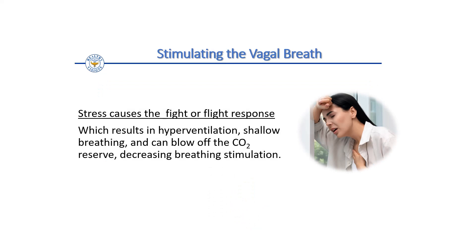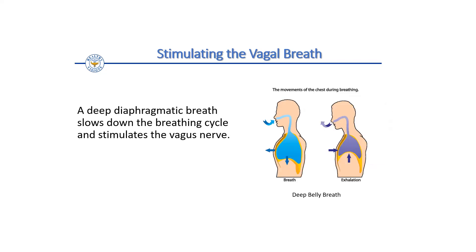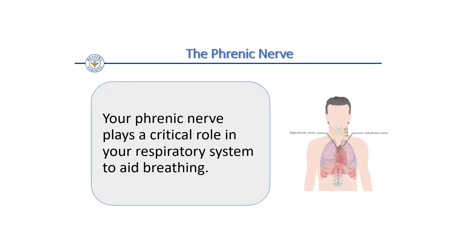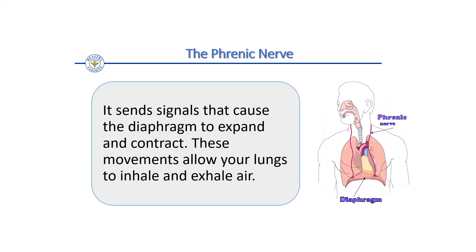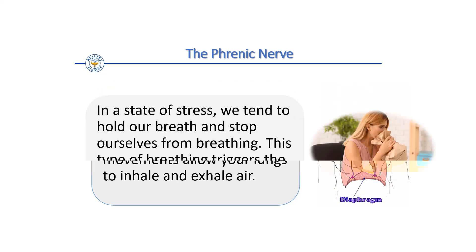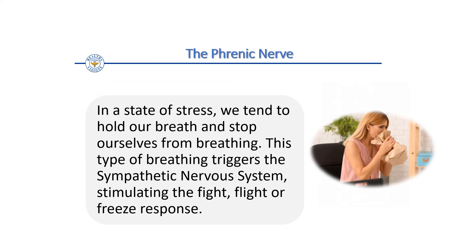Stress causes a fight-or-flight response, which results in hyperventilation, shallow breathing, and can blow off the CO2 reserve, decreasing breathing stimulation. A deep diaphragmatic breath slows down the breathing cycle and stimulates the vagus nerve. The phrenic nerve plays a critical role in the respiratory system — it is the only nerve that provides motor movement function to your diaphragm. It sends signals that cause the diaphragm to expand and contract. In a state of stress, we tend to hold our breath and stop ourselves from breathing.